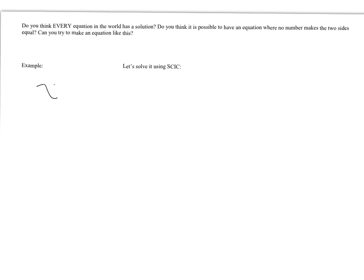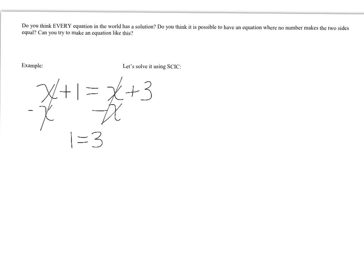What we just did is the variables cancelled out and we were left with a true statement. Here's a simple example of something with no solution: suppose x plus 1 equals x plus 3. Can the same number plus 1 equal that same number plus 3? No — if x is 4, is 4 plus 1 the same as 4 plus 3? No. When you subtract x from both sides, the x's cancel out and you're left with 1 equals 3, which is false. So there is no solution.